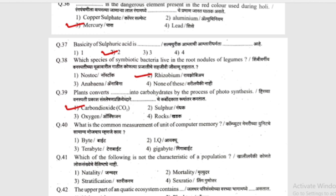The next question: what is the common measurement unit of computer memory? (Computer memory cha unit che saamanya mhoj maap?) The options are Byte, IQ, Terabyte, or Gigabyte. The most common answer is Byte.